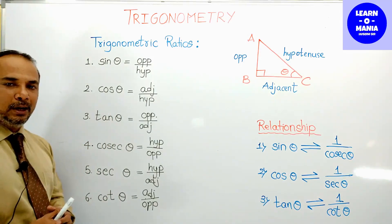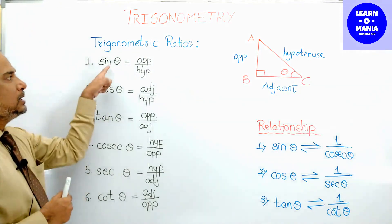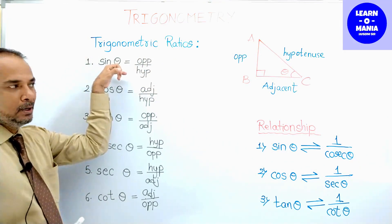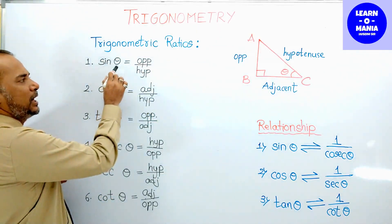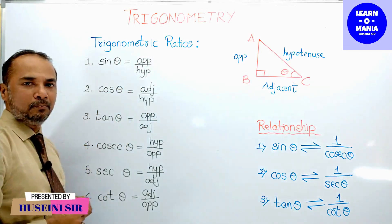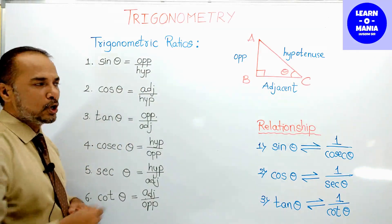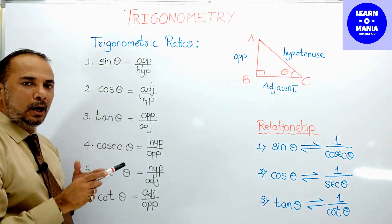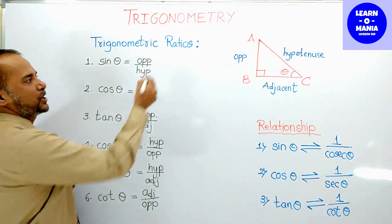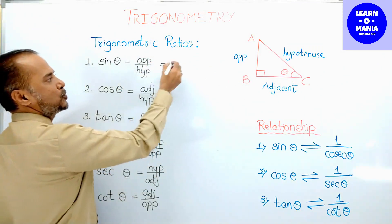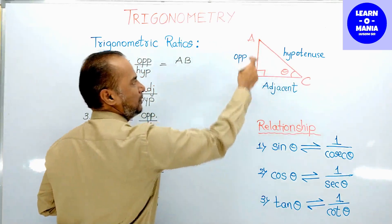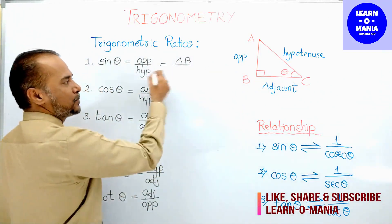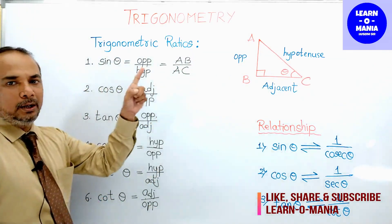Let's see what these 6 trigonometric ratios mean. If someone asks for sin theta of any angle in a right angle triangle, remember: sin theta is always equal to opposite upon hypotenuse. As per this figure, the opposite side is AB and the hypotenuse is AC.